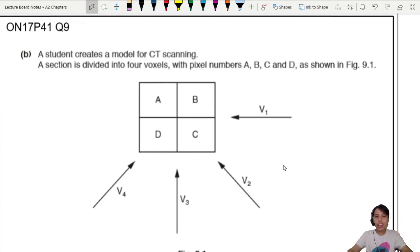ON17 P4 on question 9. In the previous video, we looked at how you can use a CT scan to shine x-rays and figure out what is the pixel number of each voxel in the human body. Now we're going to see what kind of problem can be asked. This is only on part B. I'm going to jump to part B and see how they can do this.